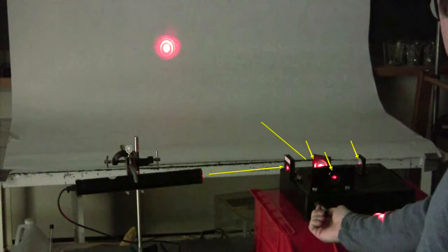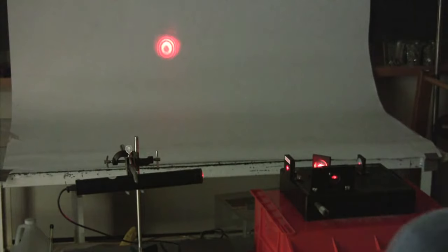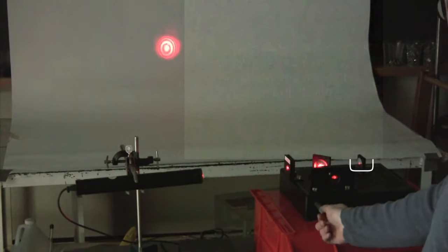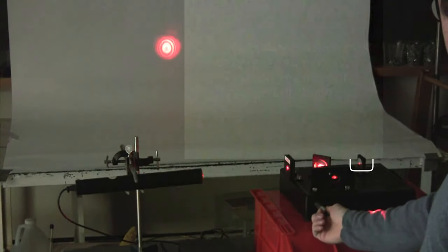A light source shines light into the interferometer where it is split and reconstructed using mirrors. The reconstructed light shows up on a screen. The bright lines indicate areas of constructive wave interference, and the darker lines indicate areas of destructive wave interference. Moving the mirror changes the position at which the light constructively and destructively interferes.